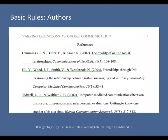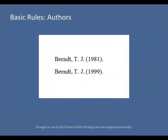Reference list entries should be alphabetized by the last name of the first author of each work. If you have more than one article by the same author — single author references or multiple author references with the same authors in the same order — list the entries in chronological order from earliest to most recent.